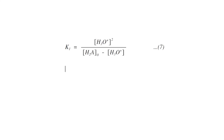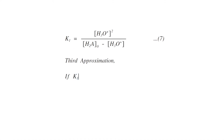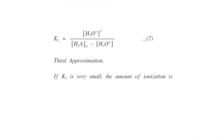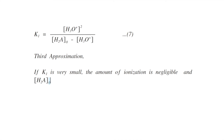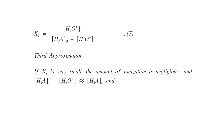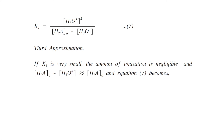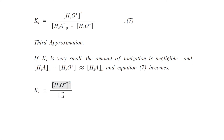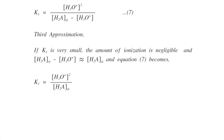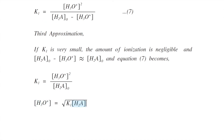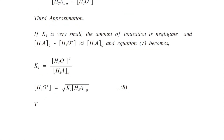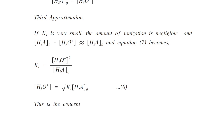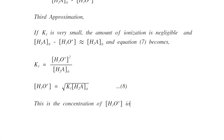For the third approximation: if K1 is very small, the degree of ionization is negligible and [H2A]₀ − [H3O⁺] ≈ [H2A]₀. Equation seven then becomes K1 equals [H3O⁺]² / [H2A]₀. Therefore [H3O⁺] equals the square root of K1 times [H2A]₀. This is equation number eight — the concentration of H3O⁺ ions for a diprotic acid.